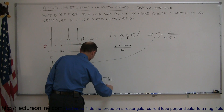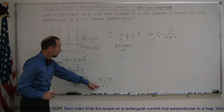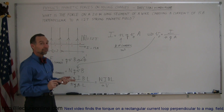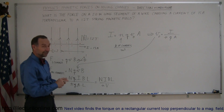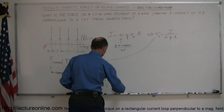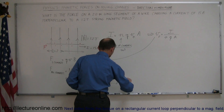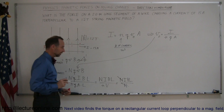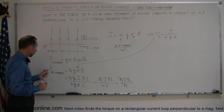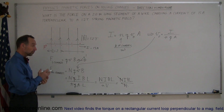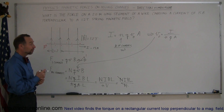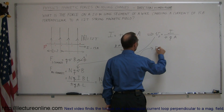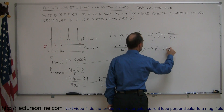Since n is the number of charges per unit volume, n multiplied by volume equals the total number of charges N. So this can be written as N·IBL divided by N, and the N's cancel out. We're left with the result that the force on all the charges in the current-carrying wire is simply equal to the current times the magnetic field times the length of the wire: F = IBL.